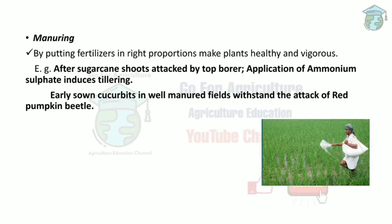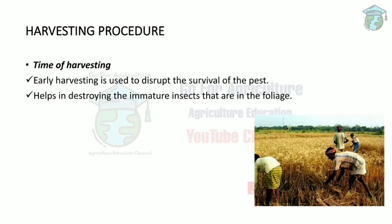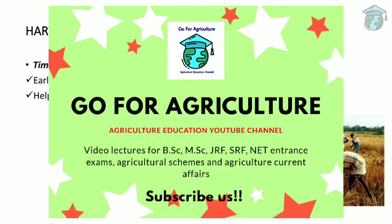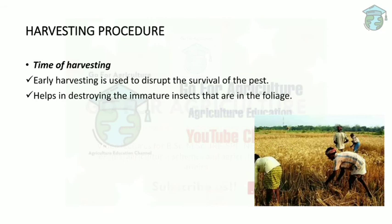Next is the harvesting procedure. Early harvesting can disrupt and kill pest survival and helps destroy immature insects in the foliage. Early harvesting depends on early crop maturation and early fruiting. Early time of sowing generally leads to early harvesting — though sometimes late sowing also helps control pests, depending on the crop and pest life cycle.